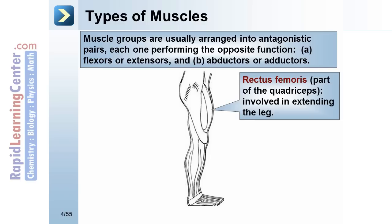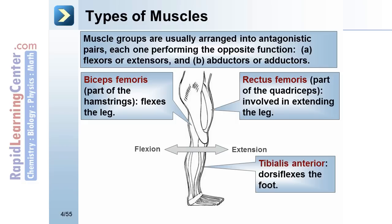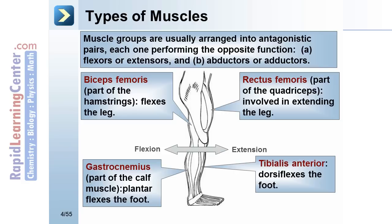The rectus femoris, part of the quadriceps, is involved in extending the leg. The biceps femoris, part of the hamstring, flexes the leg. The tibialis anterior dorsiflexes the foot, and the gastrocnemius, part of the calf muscle, plantar flexes the foot.